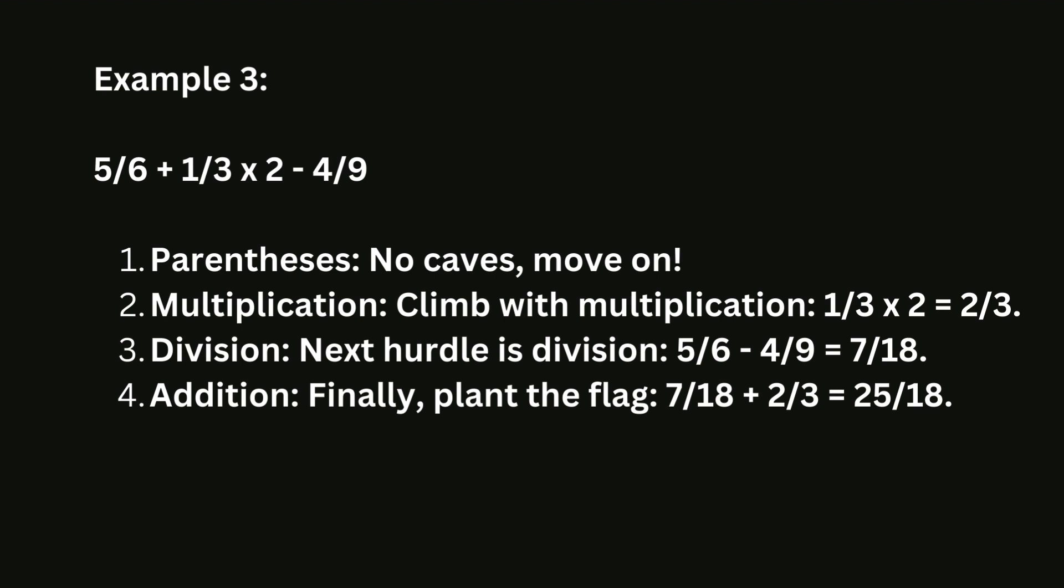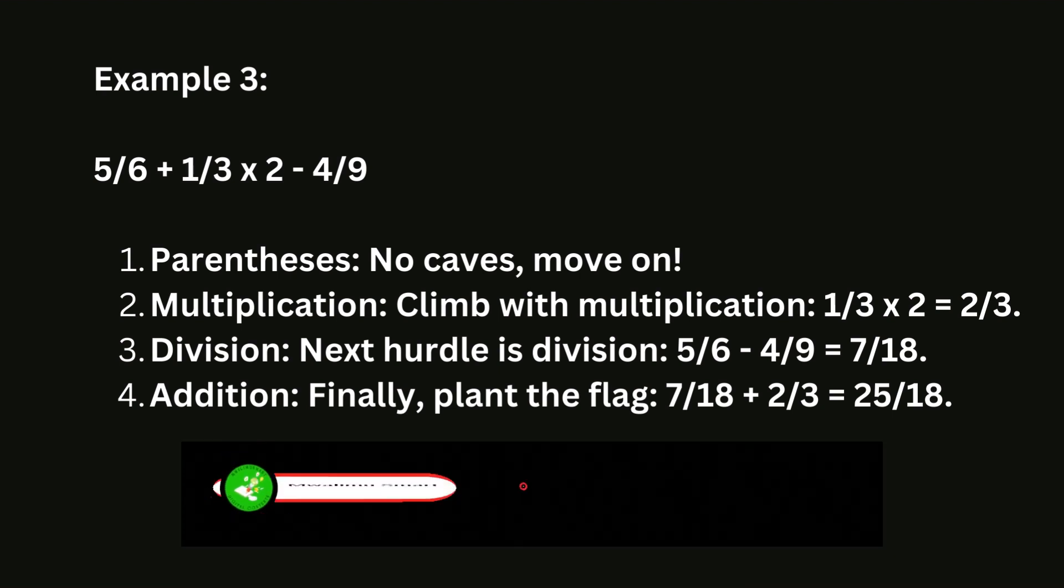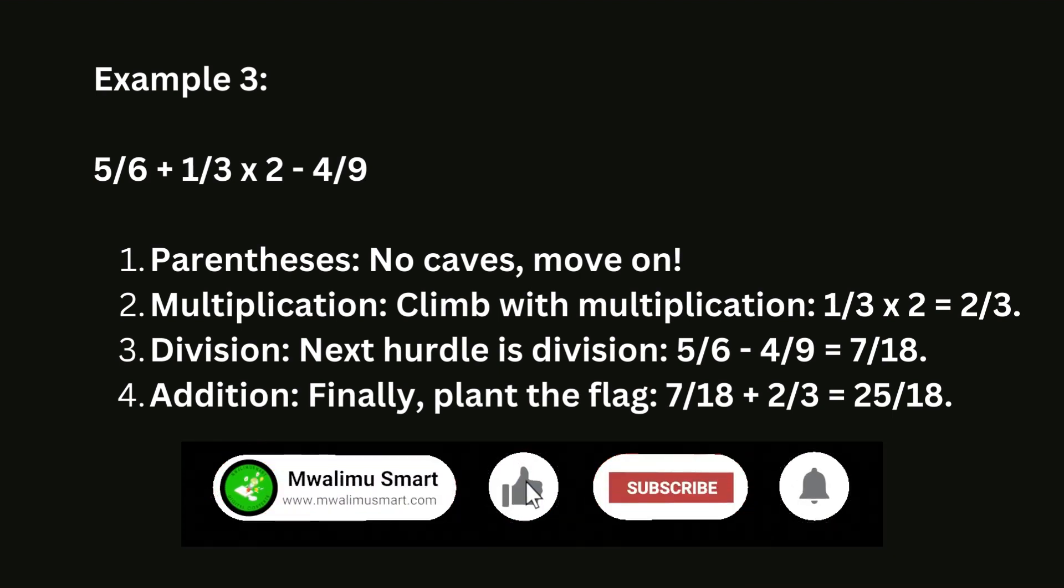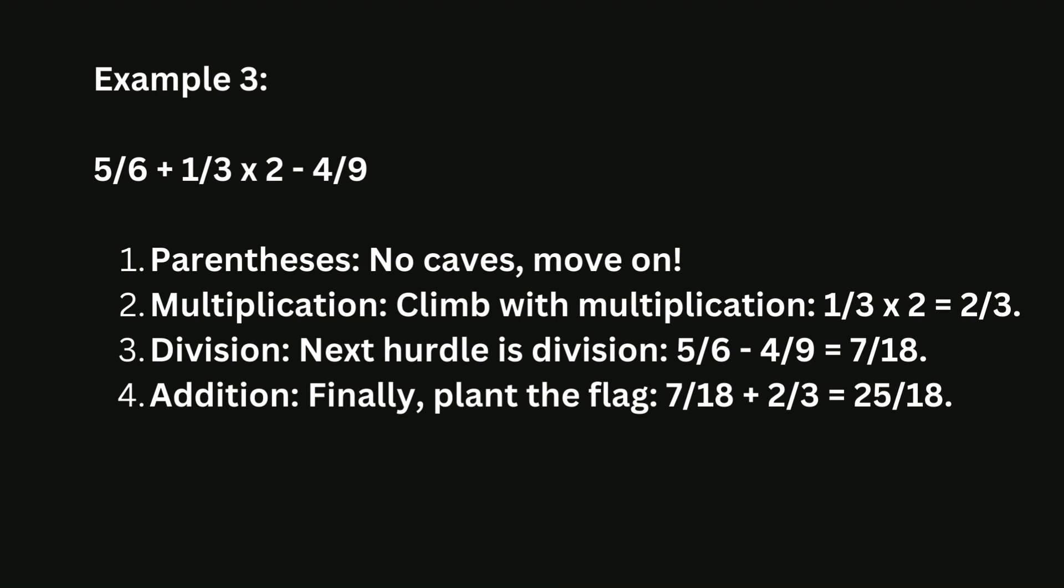Example 3: 5 sixths plus 1 third x 2 minus 4 ninths. 1. Parentheses. No caves, move on. 2. Multiplication. Climb with multiplication. 1 divided by 3 times 2 equals 2/3. 3. Division. Next hurdle is division. 5 sixths minus 4 ninths equals 7/18. 4. Addition. Finally, plant the flag. 7 divided by 18 plus 2 divided by 3 equals 25/18.